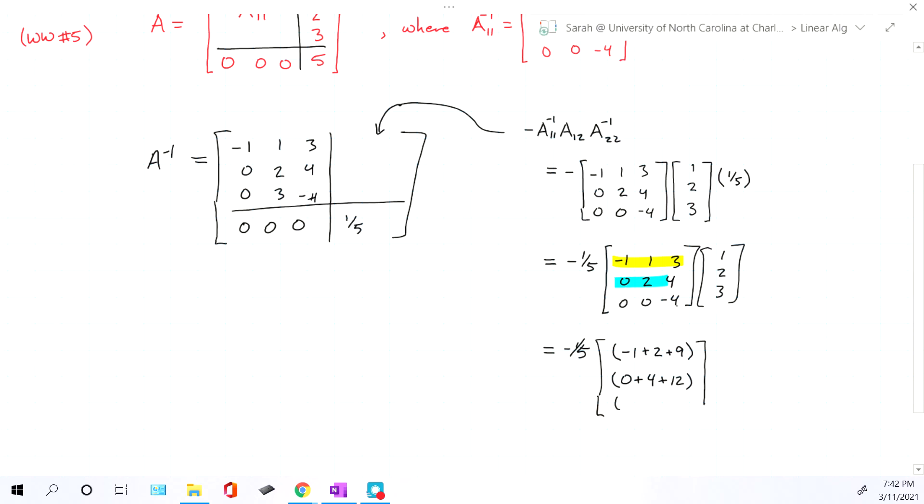Lastly, we multiply it by the last row in the matrix, the unhighlighted one. So zero times one is zero. Zero times two is zero. And negative four times three is negative 12. This tells us we have negative one fifth times that looks like 10, 16, and negative 12.